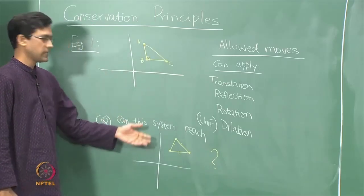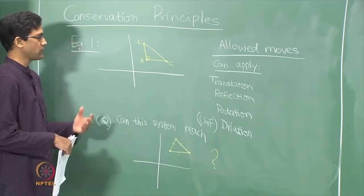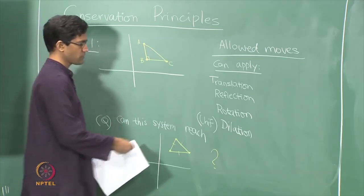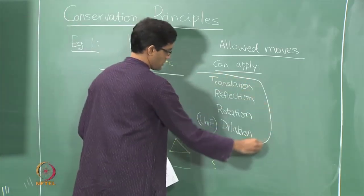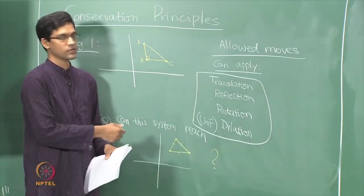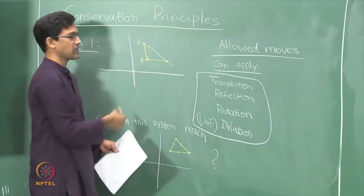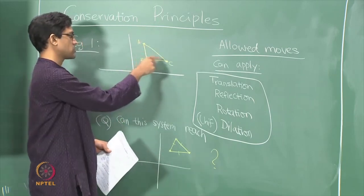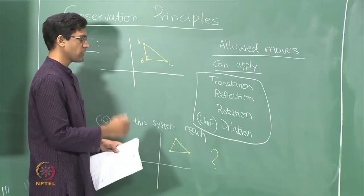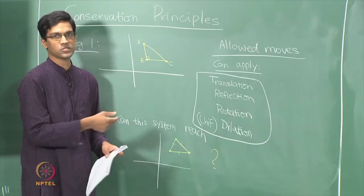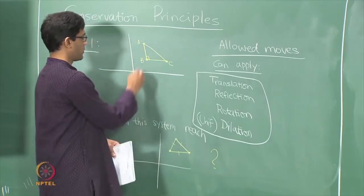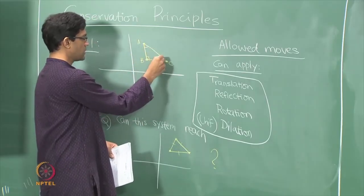The attempt to answer such a question lies in trying to find something that is conserved during the evolution — something that does not change. In this case it is easy to answer because we have studied these in depth. A translation, reflection, or rotation gives you a congruent triangle — it does not change lengths or angles. Whereas a uniform dilation will not preserve lengths but will certainly preserve angles, so it gives you a similar triangle.